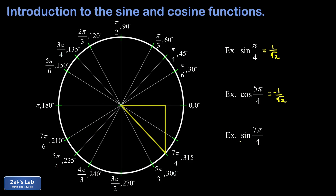For the sine of 7π/4, we arrange the 45-45-90 triangle to point to this angle in the fourth quadrant. The legs are still both 1/√2, but the y-coordinate is negative because we're below the x-axis. Since the sine function is just the y-coordinate of a point on the unit circle, the sine of 7π/4 is −1/√2.